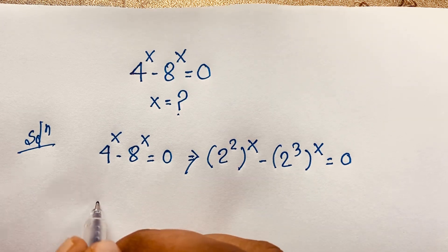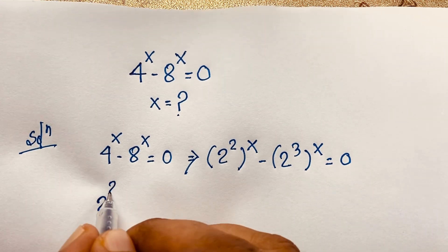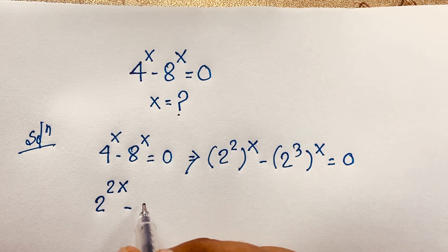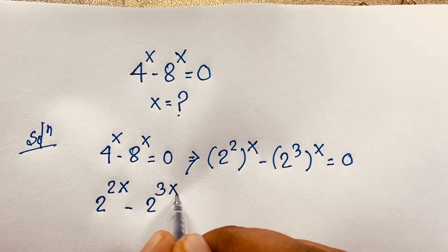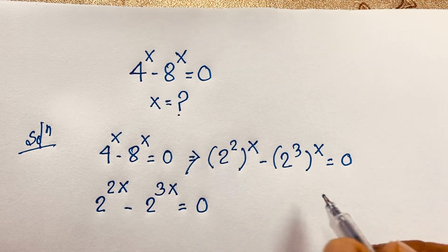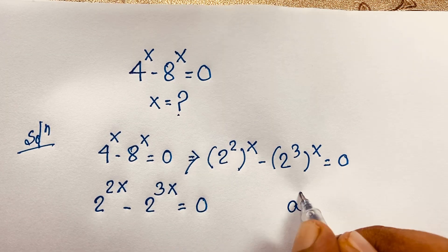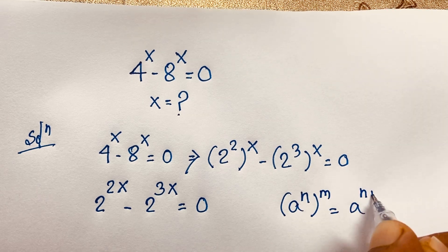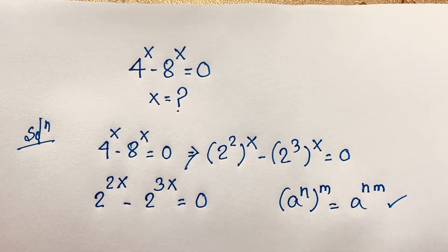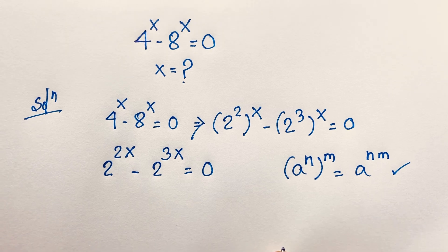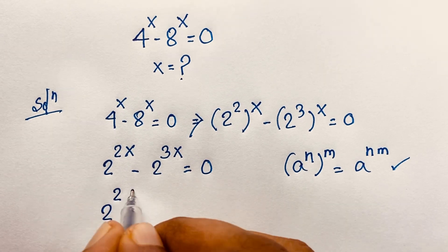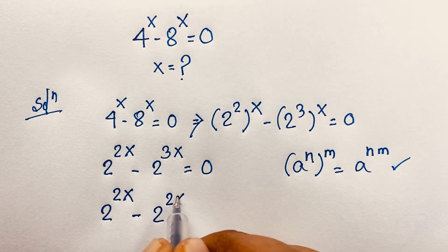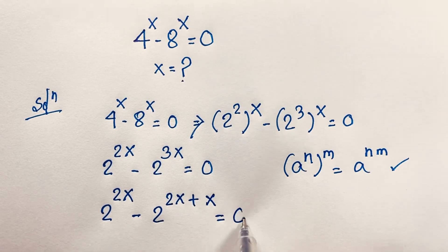Then it will be 2 to the power 2 times x, which is 2 to the power 2x, minus 2 to the power 3 times x, which is 2 to the power 3x. According to the exponential formula, we know that a to the power n, bracket whole to the power m, equals a to the power n times m. Now you can say here 2 to the power 2x minus 2 to the power 3x, and 3x will be 2x plus x, is equal to 0.